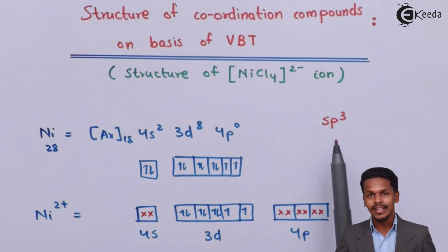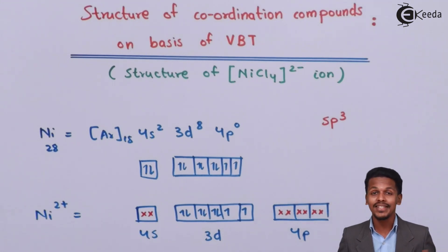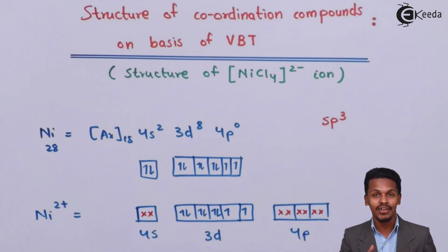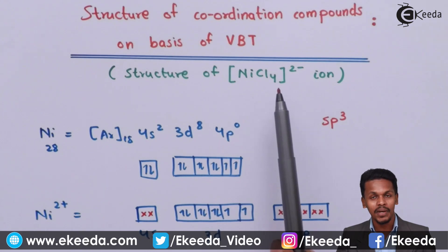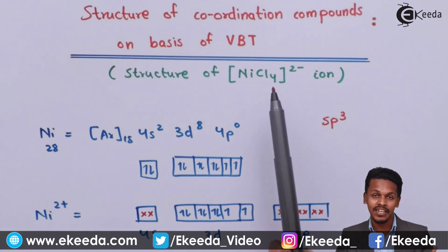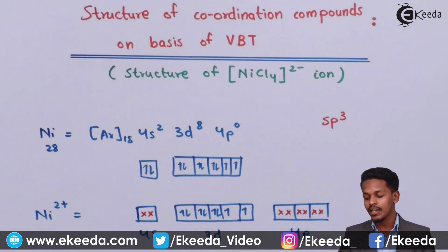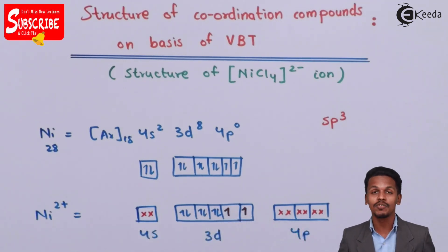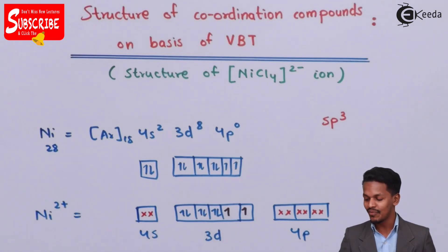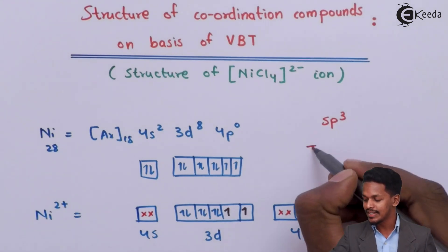Since the hybridization is sp³, we understand the geometry will be tetrahedral. Also, we can predict the magnetism — there are 2 unpaired electrons in the d orbitals, so this complex is paramagnetic in nature.